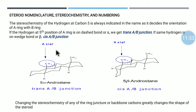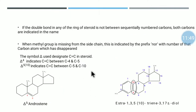One more important point: changing the stereochemistry of any one of the ring juncture or backbone carbon atoms will change the shape of the steroid, as we have seen in our example.